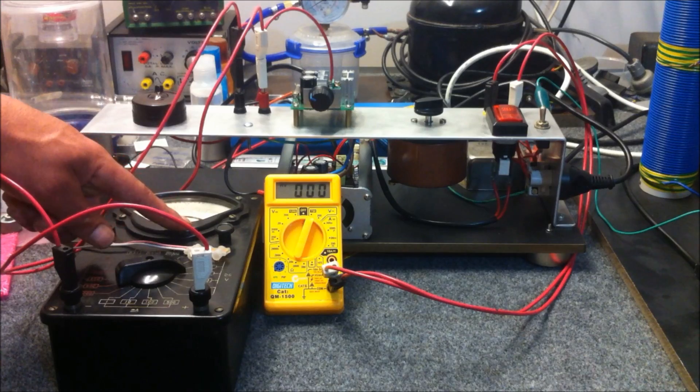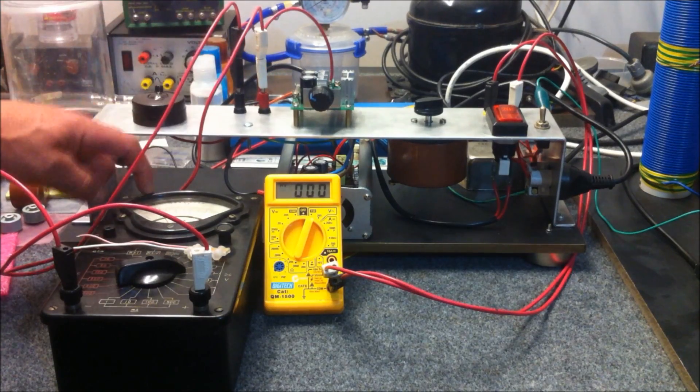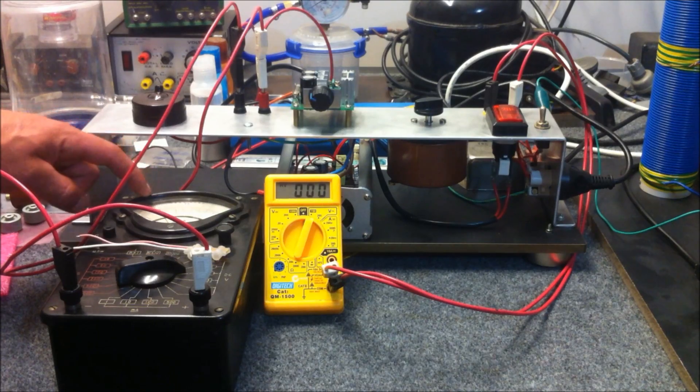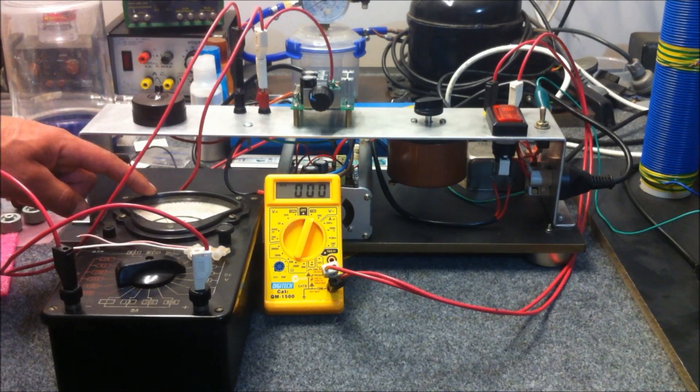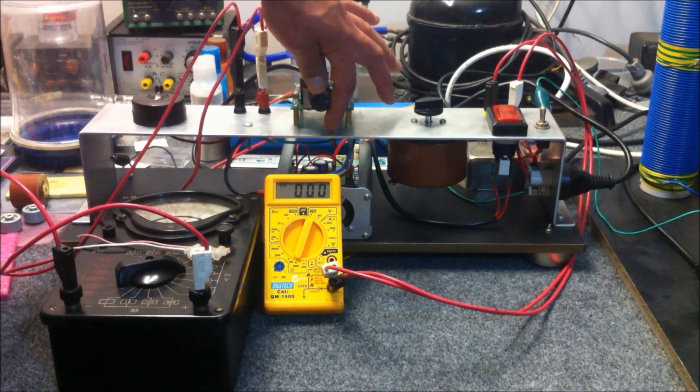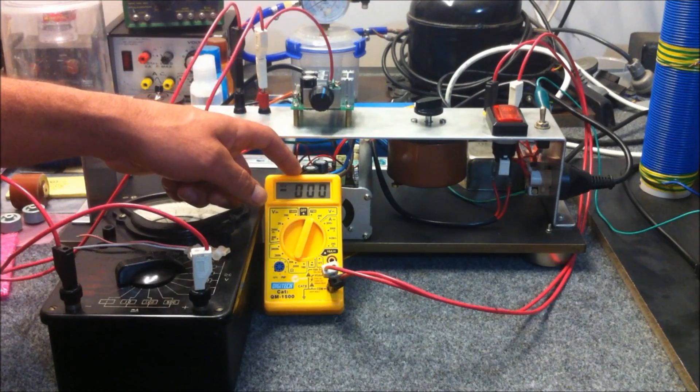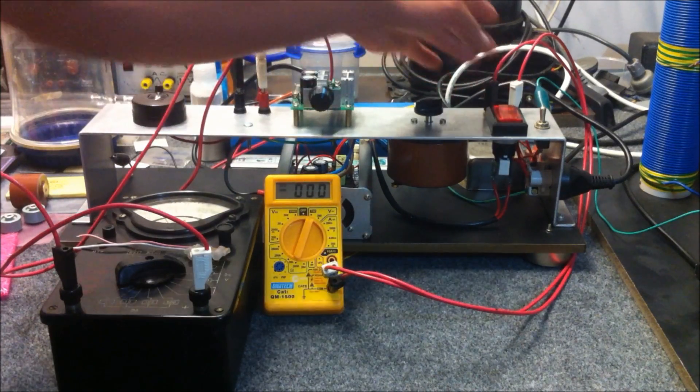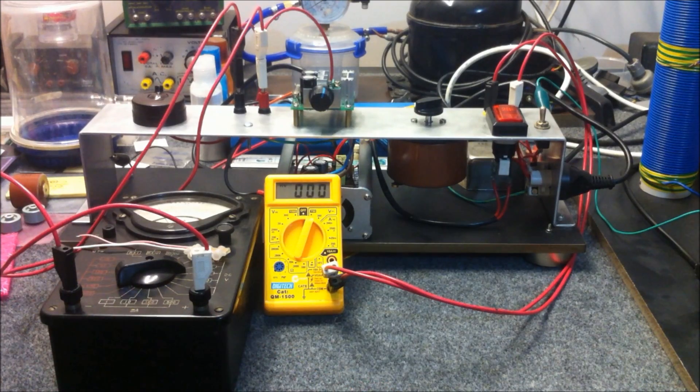So now this multimeter here is connected to the input terminals so that we can have a look at the voltage and make sure there's not much of a fluctuation in voltage during the full operating range of the circuit. And this multimeter here is connected to the output which allows us to see how much voltage we are pumping into our 12,000 volt neon sign transformer.